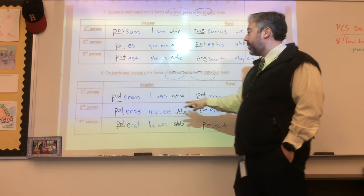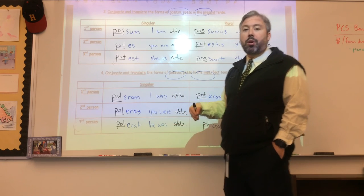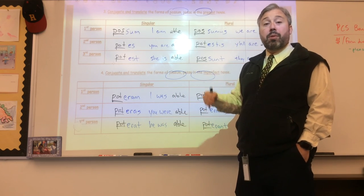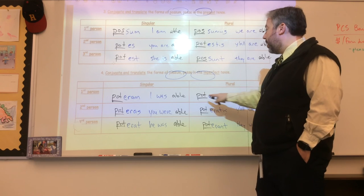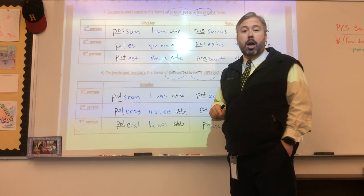And so notice, because all of the imperfect forms of to be - eram, eras, erat and so on - notice all of the forms start with an E, therefore that is why there is a POT in front of all of them. So that should really help you out.